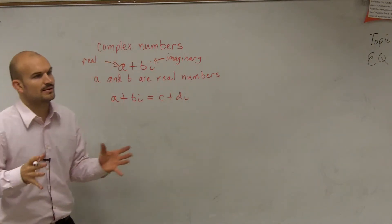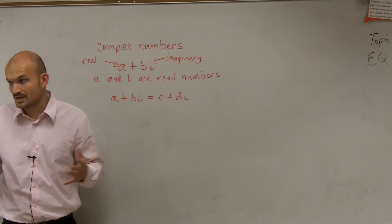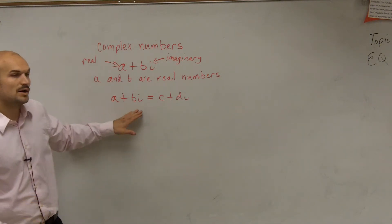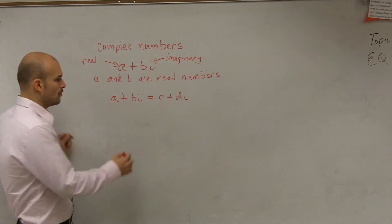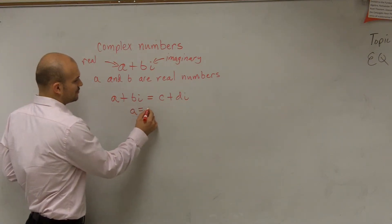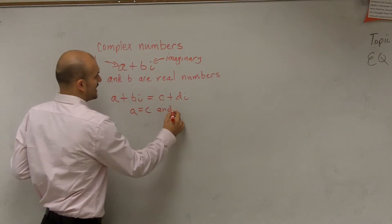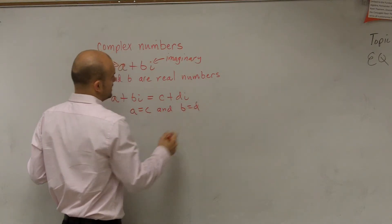So first thing, one important thing about complex numbers is the equality of complex numbers. If you have one complex number equal to another complex number, therefore, you must have a equal to c and b equal to d.